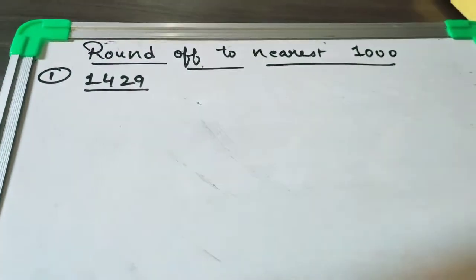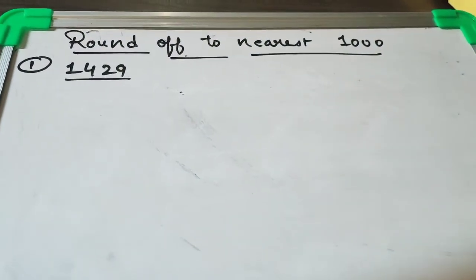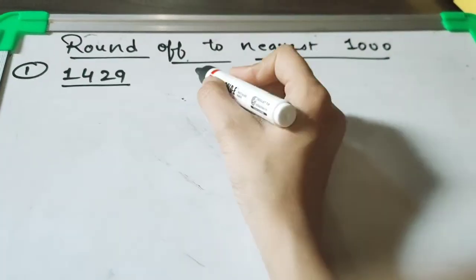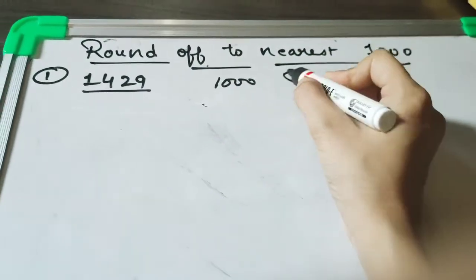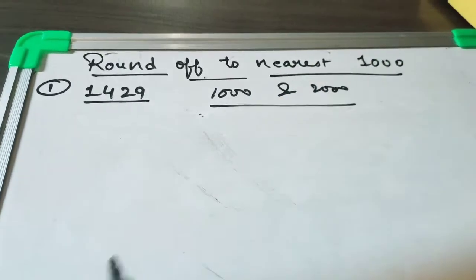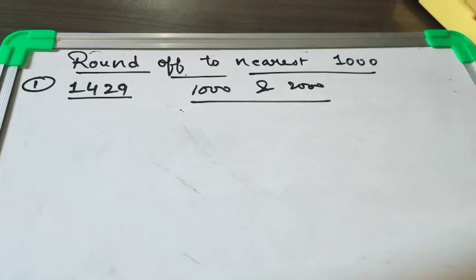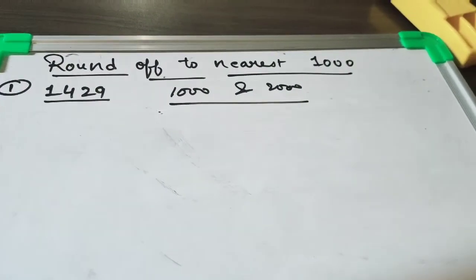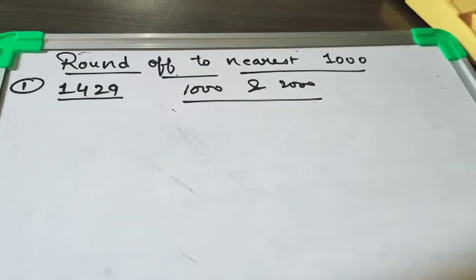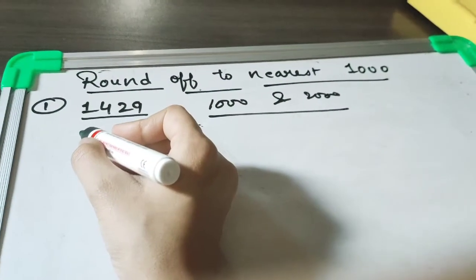So now first, check this number. It is between which two numbers near a thousand? That is one thousand and two thousand. These are the two numbers it is near to. So now we will round it off.